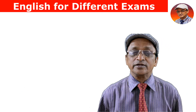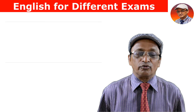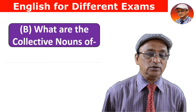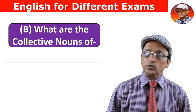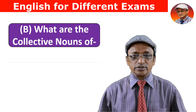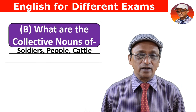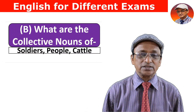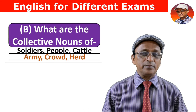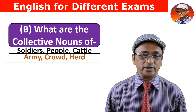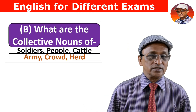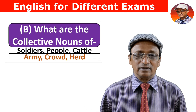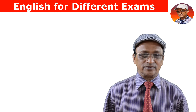Now let's have another type of test: creation of collective nouns from specific words. Soldiers taken together create 'army' — army is a collective noun. When many persons are taken together, 'crowd' is created — crowd is a collective noun. So army and crowd are collective nouns.